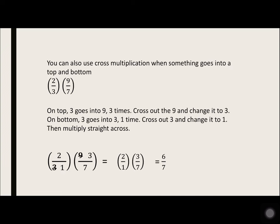You can also use cross multiplication when something goes into a top and bottom. 2 over 3 times 9 over 7. This is the same problem. Notice there's a 3 on bottom and a 9 on top. 3 can go into 9, 3 can also go into 3. So we're going to cross multiply.